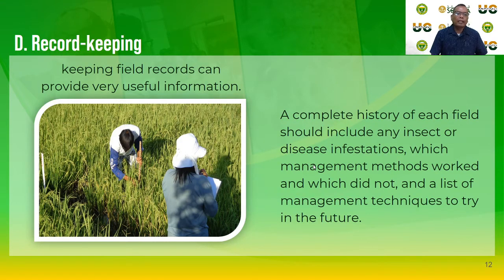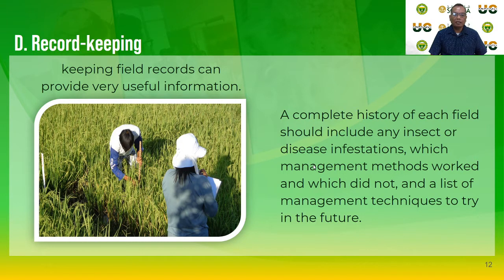Another avoidance technique is record keeping, which is very important. Keeping field records can provide very useful information. A complete history of each field should be included in your record book: any insect or disease infestation, which management methods worked and which did not, all activities implemented to control pests, and a list of management techniques tried, for use in future planning.